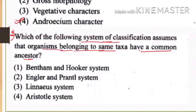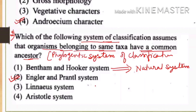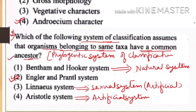The question asks: in which system of classification do organisms belonging to the same taxa share a common ancestor? That system is the phylogenetic system of classification, which was given by Engler and Prantl. Bentham and Hooker gave the natural system of classification, and Aristotle gave the artificial system. Since the question focuses on common ancestry, it is pointing to the phylogenetic system.